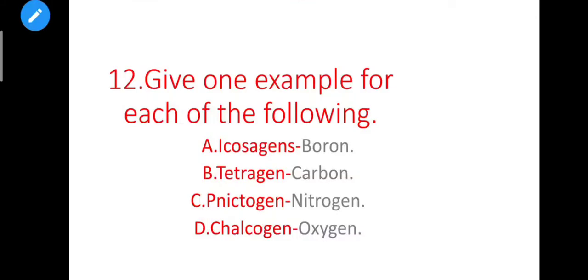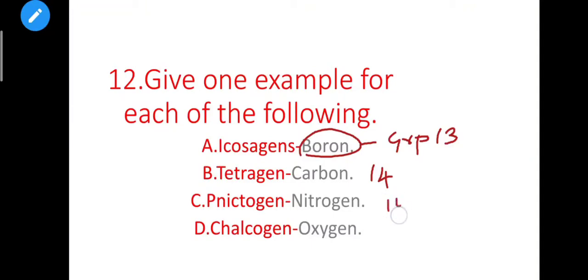Twelfth question: give one example for each of the following. ICOs refers to group 13 — example: boron. Tetragen refers to group 14 — you can write any element from group 14. Chalcogen refers to group 16 elements — write one example from the group. You can check the group and give one example each.